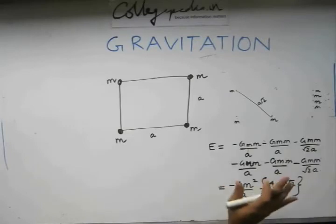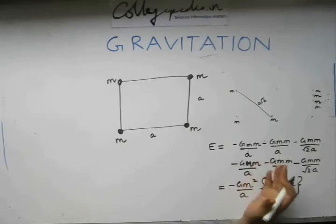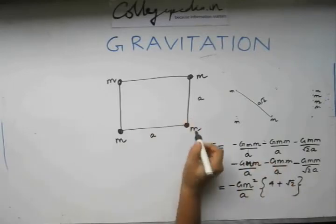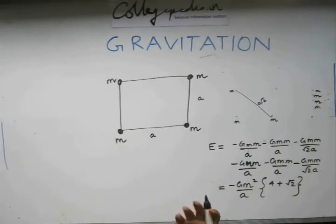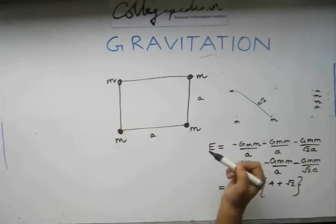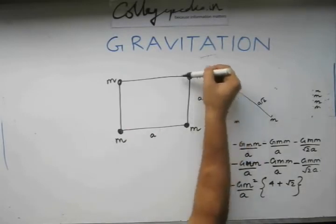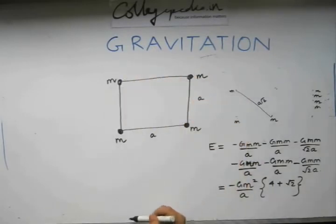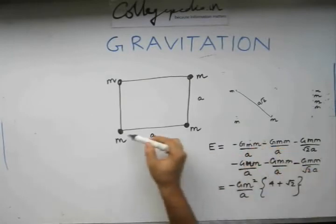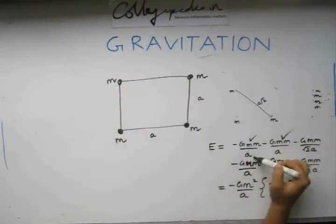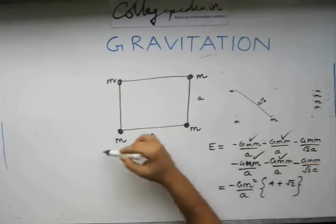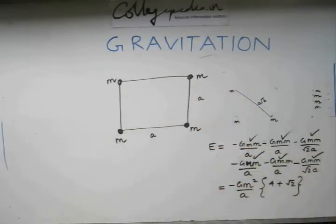Note that this can also be solved in a simpler way by looking at pairs. Each pair of masses will have some potential energy associated with it. How many pairs do we have? 1, 2, 3, 4, 5, and 6. So each pair contributes one energy term. The pairs along the sides contribute Gm squared by a terms, and the diagonal pairs contribute Gm squared by root 2a terms. This is how we arrive at the same result.